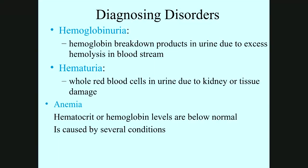Other disorders include hemoglobinuria — hemoglobin breakdown products in the urine due to excess hemolysis in the bloodstream — and hematuria, where whole red blood cells can be found in the urine due to kidney failure or some other tissue damage. Anemia is caused by an abnormal level of hemoglobin that is below normal, and this can be caused by several conditions.